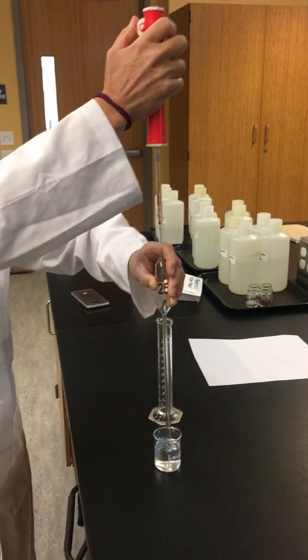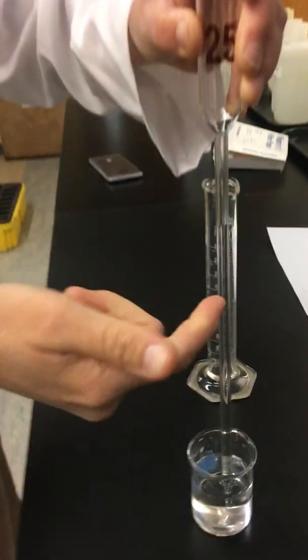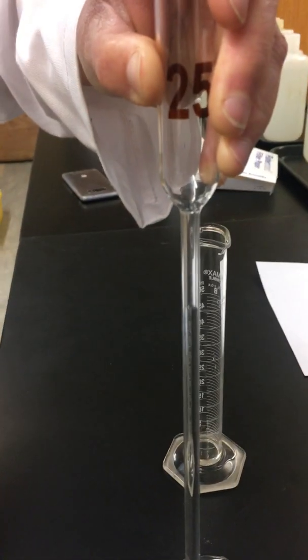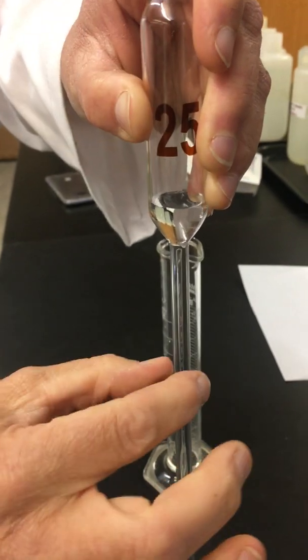Now how these pipette aids work is we turn the dial, and as we can see, we have volume coming up into it. When doing this, we have to be careful because it goes through this thinner part of the pipette much faster than it does this thicker part.